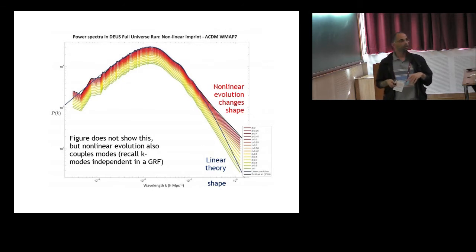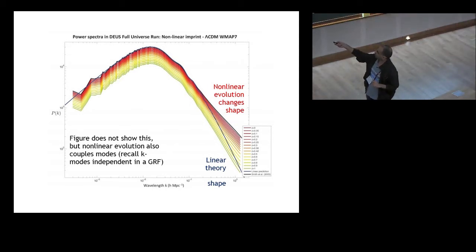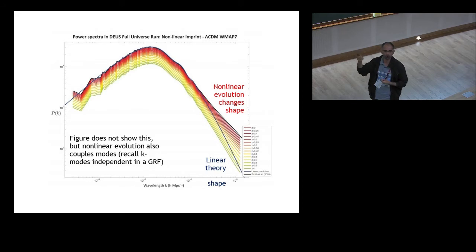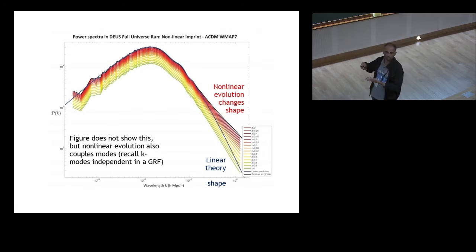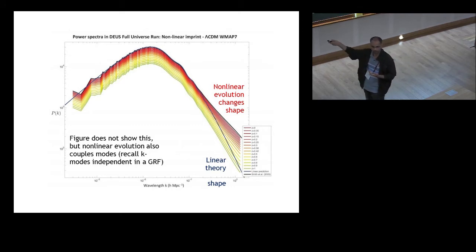Because k modes are independent in a Gaussian random field and the evolution is linear during the linear regime, the fact that you don't have multiplicative evolution is evidence that you're not in the linear regime anymore. Non-linear effects actually mix together different k modes — we will see this more explicitly later. Growth is faster at smaller scales, which is a consequence of hierarchical structure formation. Small scales become non-linear quicker than larger scales in the standard model of cosmology.